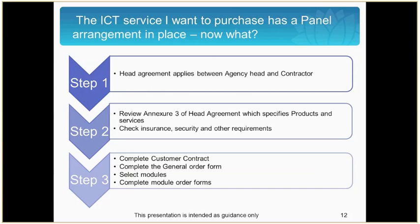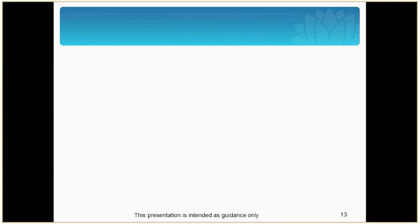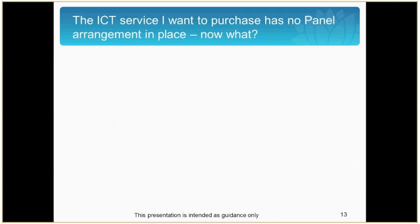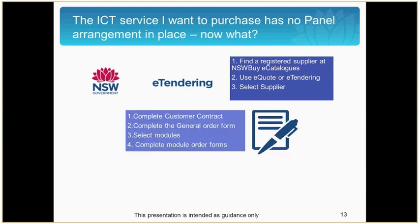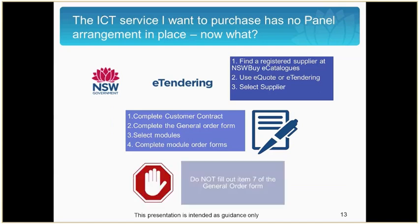Select and complete the modules and module order forms. What if the ICT service that you want to purchase has no panel arrangement in place? If there is no panel arrangement, you need to follow normal procurement processes, finding a registered supplier from Scheme 20, which is the pre-qualification scheme for ICT goods and services, using e-quote or e-tendering to select your preferred supplier. You will then complete the customer contract, general order form, modules and module order forms. Do not fill out item 7 of the general order form as there is no panel arrangement.